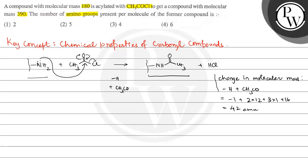So for one amino group, there's a 42 amu change in the molecular mass. Now let us calculate the total change in molecular mass in this compound. The total change in molecular mass equals final mass 390 minus initial mass 180.